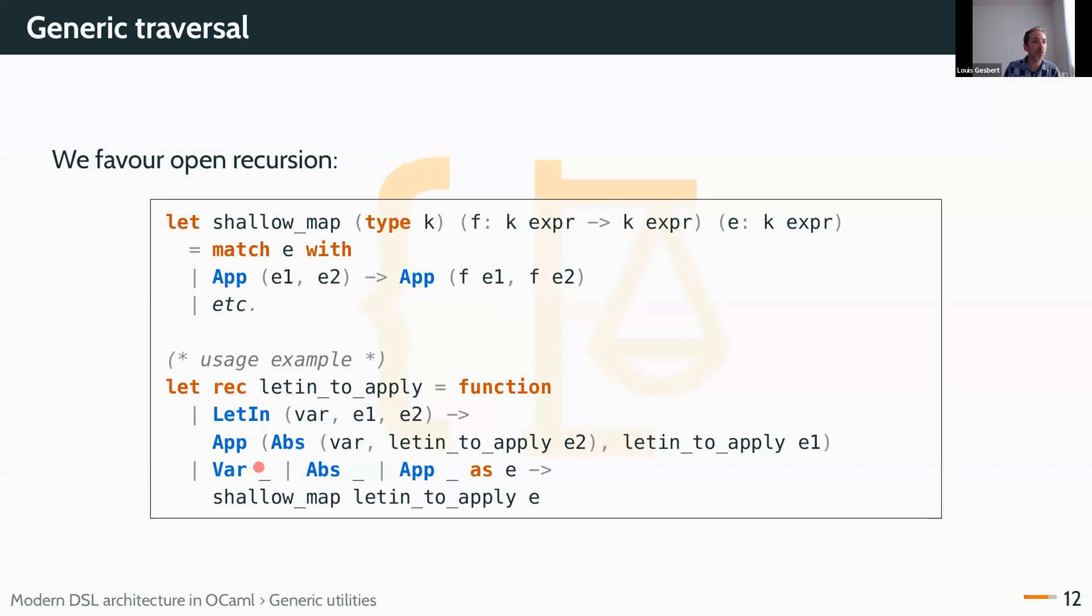For the case I want to transform, here suppose we have let-ins and we want to translate that to lambda calculus. We can do the rewrite and call the function recursively normally. But for cases where I don't want to do transformation, I just have to call shallow_map with my function here. And it will destruct the term, recurs with let-in to app, and then rebuild the same term. That works well. There is a big limitation though.